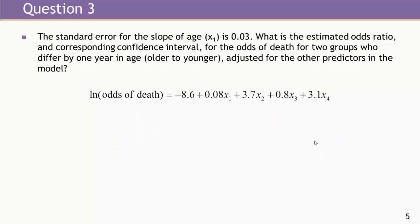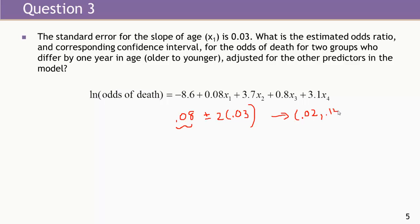The standard error for the slope of age is 0.03. What is the estimated odds ratio and confidence interval for the odds of death for two groups who differ by one year in age, adjusted for other predictors? The estimated log odds ratio per one year of age is just the slope for age — 0.08 — which is the log odds ratio after adjustment for shock, malnutrition, and alcohol. Adding and subtracting two standard errors gives a confidence interval for the log odds ratio of 0.02 to 0.14. Exponentiating, the estimated odds ratio is e to the 0.08, approximately 1.08 — an 8% increase in the odds of death per year of age.